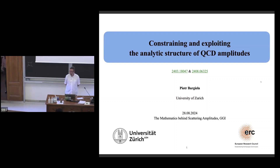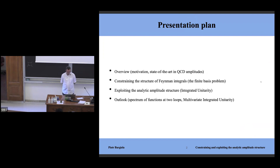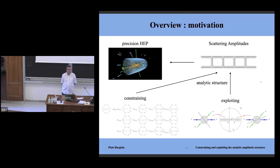Thank you to the organizers for this opportunity. I will discuss two aspects of QCD amplitudes: first, constraining the analytic structure, related to finding a finite basis of Feynman integrals; and second, exploiting this analytic structure, which has a relation to dispersion relations and what I call integrated unitarity. I will conclude with some future perspectives.